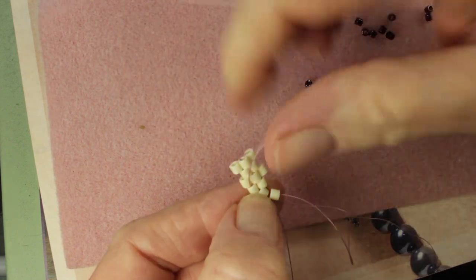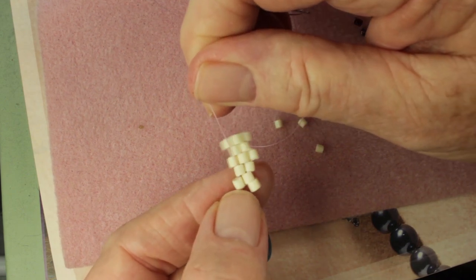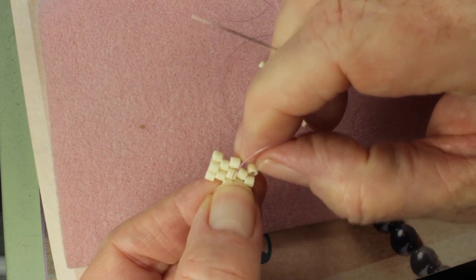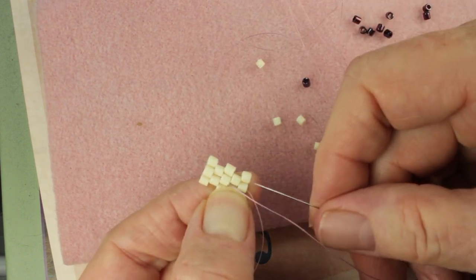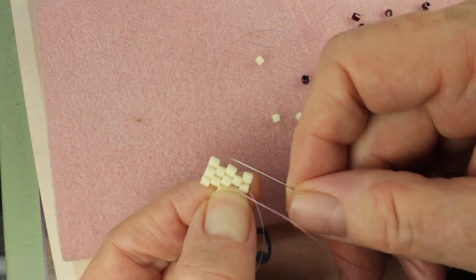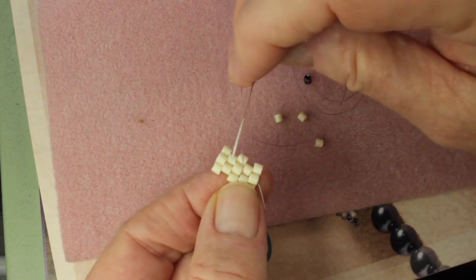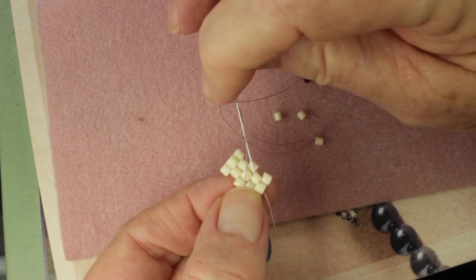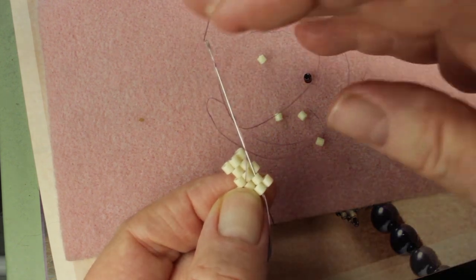When you pull it through, this bead will sit where it's supposed to. But now our goal is to have our thread coming out this bead going that way. So to do that, from where I am, make a u-turn to the bead above, plus go down one again towards the bottom of the work.